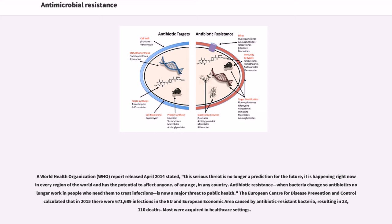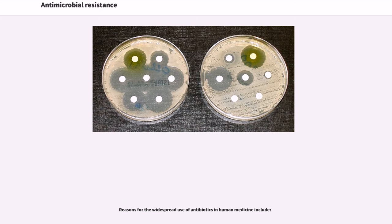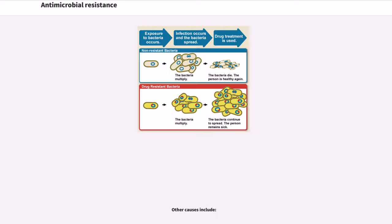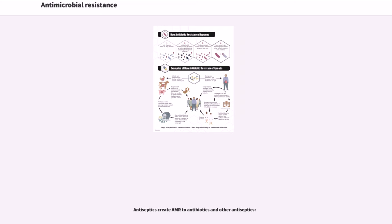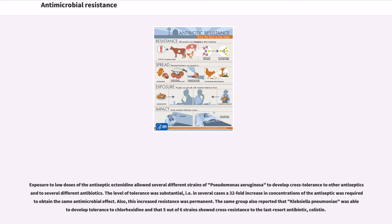Most were acquired in health care settings. Bacteria with resistance to antibiotics predate medical use of antibiotics by humans. However, widespread antibiotic use has made more bacteria resistant through the process of evolutionary pressure. Antiseptics create AMR to antibiotics and other antiseptics. Antiseptics appear to activate tolerance mechanisms in bacteria which offer them protection against a range of antiseptics as well as antibiotics. These findings may explain the increase in treatment-resistant hospital infections. Exposure to low doses of the antiseptic octenidine allowed several different strains of Pseudomonas aeruginosa to develop cross-tolerance to other antiseptics and to several different antibiotics, and this increased resistance was permanent.